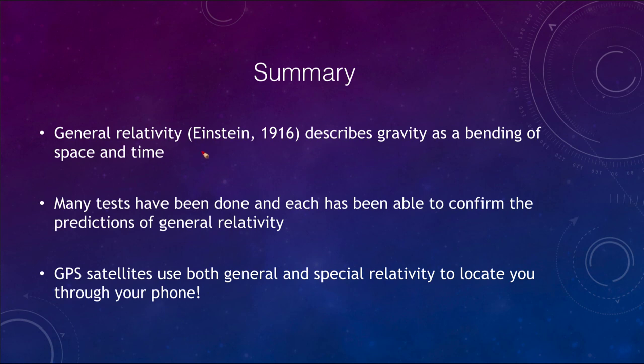So let's finish up here as we do with our summary. Remember, general relativity given to us by Einstein in 1916 describes gravity as a bending of space and time as compared to Newton's force between two objects. Many tests have been done and each of these has been able to confirm the predictions of general relativity. As an example, the GPS satellites use both general and special relativity to locate you through your phone, to find out where you are and to be able to allow you to travel to various places using GPS on your phone. General and special relativity do need to be taken into account. So that concludes this lecture on general relativity.